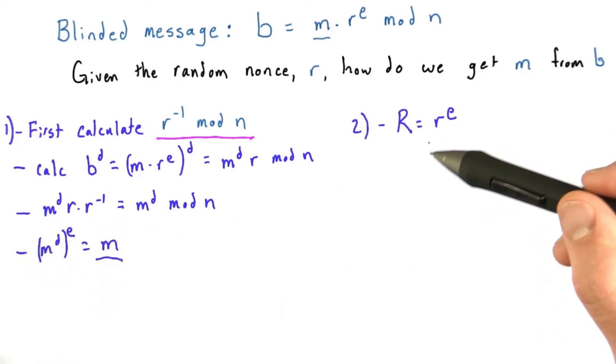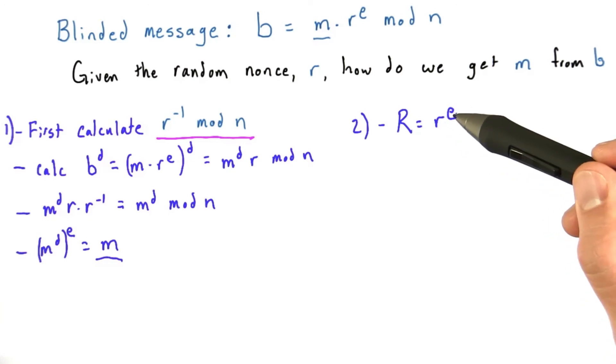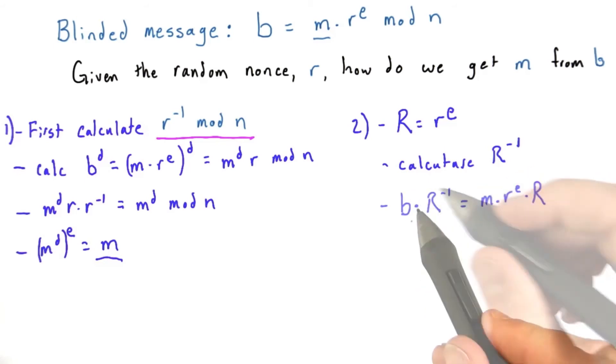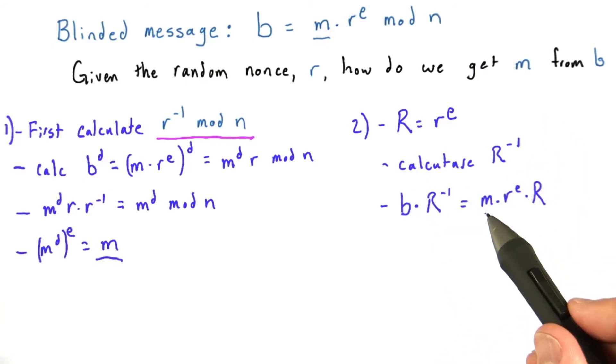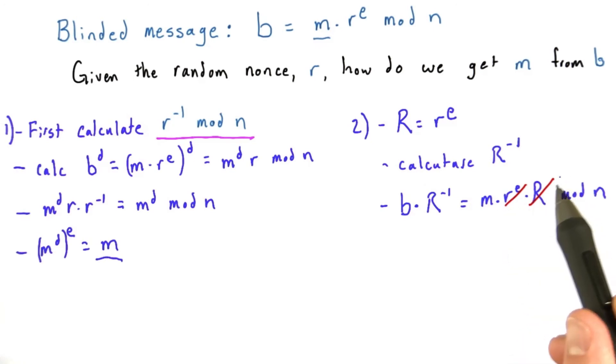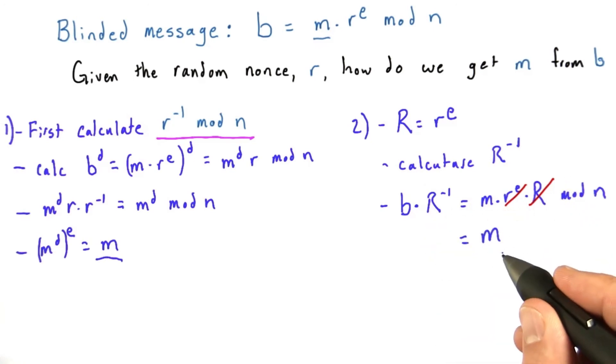And the second way of solving this problem: first, take our random nonce to the power e, and we'll call that capital R. We're going to calculate the inverse of R. If we take our blinded message times the inverse of R, we get our message times r^e times R inverse. Since r^e and capital R are inverses, they cancel, and we're left with just our message.